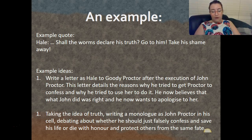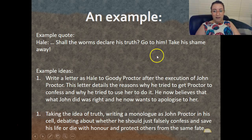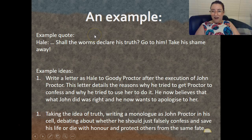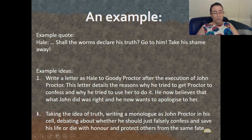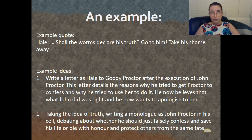He now believes that what John did was right and wants to apologise to her and to John's family. This really explores how he says 'take his shame away' but actually the real person whose shame needs taking away is Hale's, addressing the sarcasm in that moment. The other idea I had was taking the theme of truth — this quote is about truth, about whether truth should be used as a weapon and how valuable truth is to certain people.